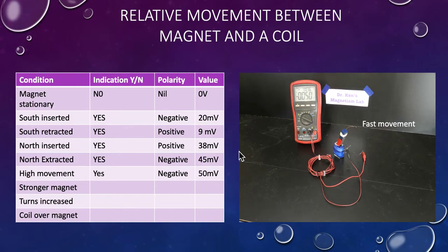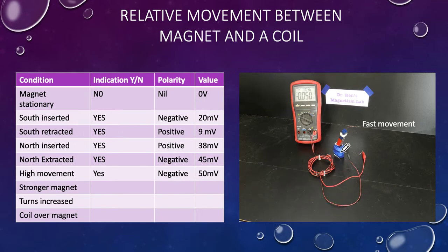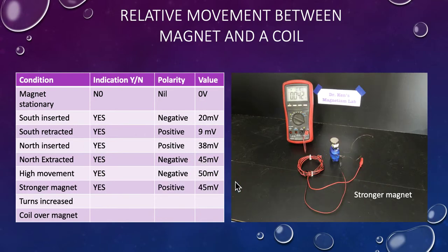This time we are going to pull the magnet out. Here's my north poles have come out - we've got 50 millivolts and there's a negative. Again, that was what was anticipated, so we've got a negative.